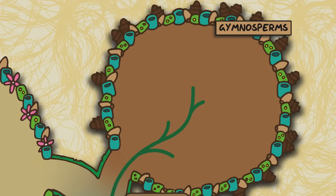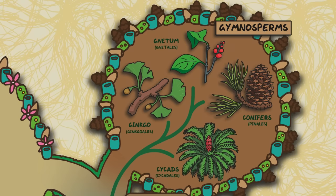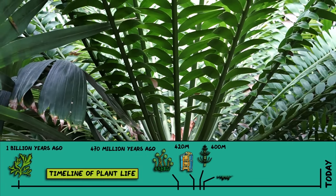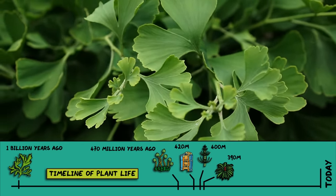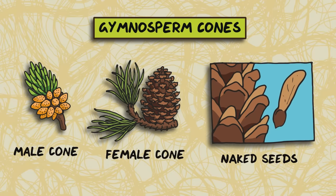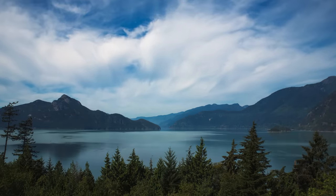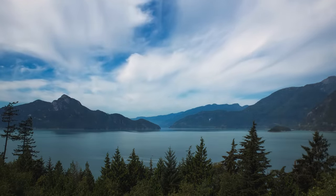First let's look at the gymnosperms, which today comprise the major groups of cycads, ginkgo, neatum, and conifers like pines and spruces. These first appear in the fossil record at around 390 million years ago. Gymnosperms reproduce through cones, which come in male and female forms. Male cones produce pollen while female cones contain ovules that develop into seeds upon fertilisation. These are known as naked seeds because they're not covered in anything like a fruit or a hard shell. Conifers are adapted to cold and dry conditions with needle-like leaves to reduce water loss and sturdy cones for seed protection.